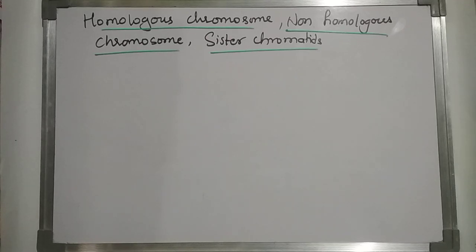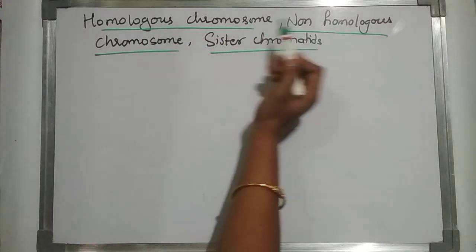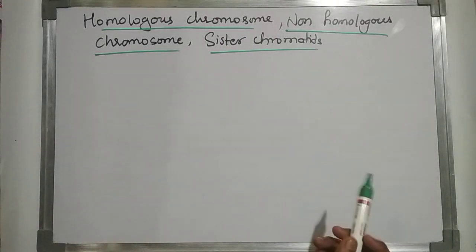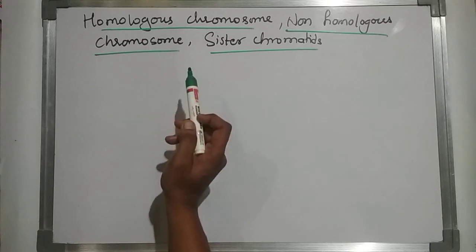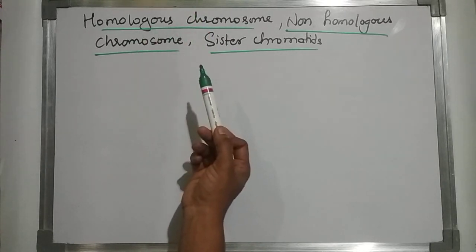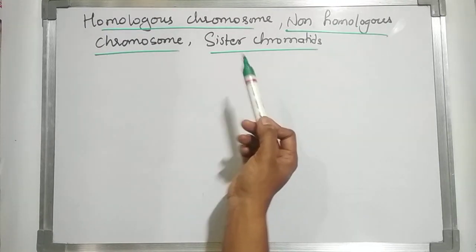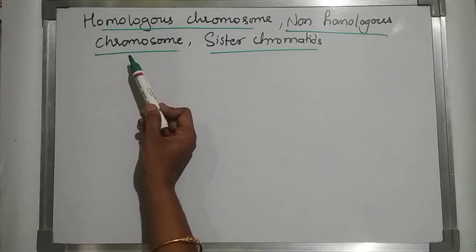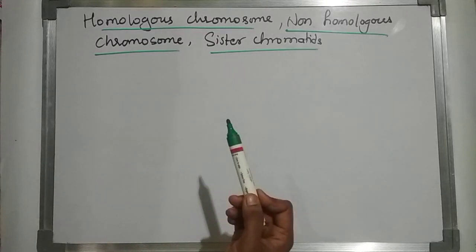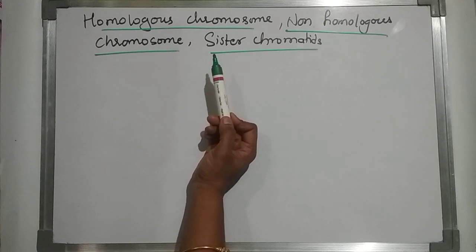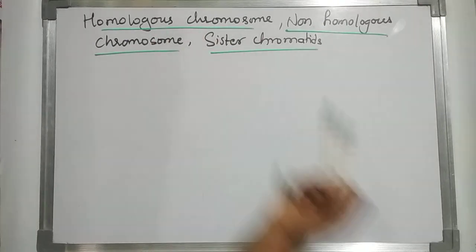Hello friends, welcome to my channel Bio Knowledge with Dhanushri. Today our topic is homologous chromosomes, non-homologous chromosomes, and sister chromatids. Many students have confusion regarding these simple terminologies related to genetics — homologous, non-homologous, sister chromatids, and non-sister chromatids. Listen to this video to the end so you can understand this terminology.